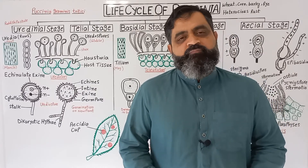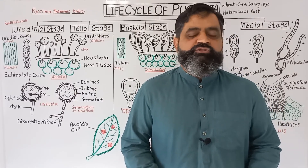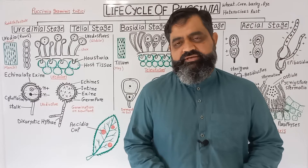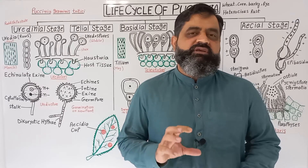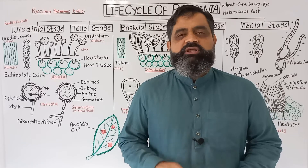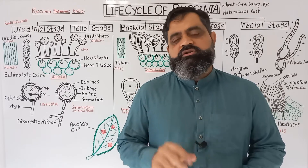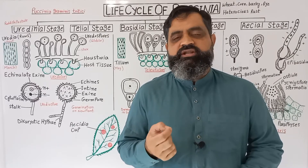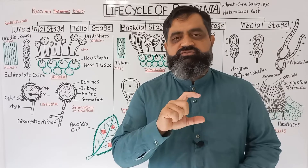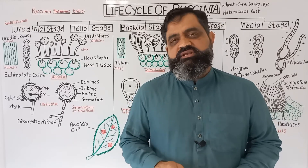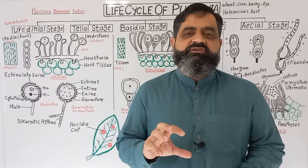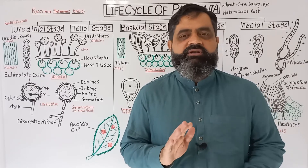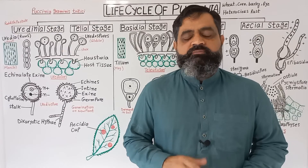Hello to all students. I hope you are doing fine. This is Professor Masood Fuzal. In this video lecture we are going to discuss the life cycle of Puccinia. Puccinia is a parasitic fungus which is commonly known as rust fungus. It is called rust because its color is just like rust — orange, reddish orange — which is usually found on the surface of iron. So its spores are rusty in color, that is why we call it rust fungus. Today we are going to discuss the complete life cycle, which is a little bit complicated but not difficult.